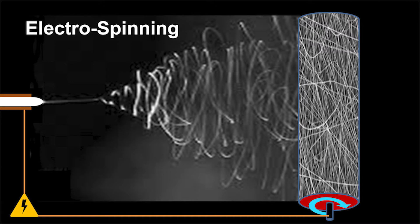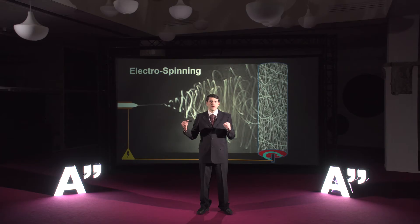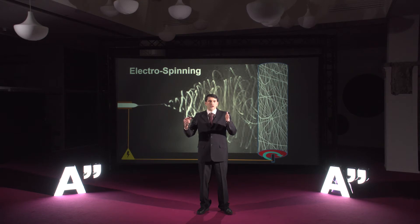Let me tell you about electrospinning — how we have produced nanofibers. In this process we make a polymer solution which is pumped through a capillary. This capillary is very small, with a diameter of around one millimeter or smaller, and in front of this capillary there is a conductive collector. It can be a rotating drum, and a high DC voltage is applied between the nozzle and the collector.